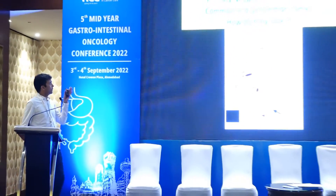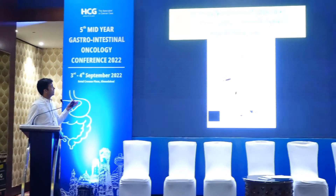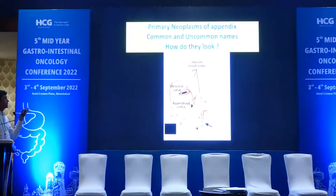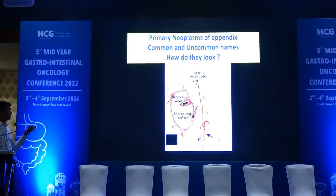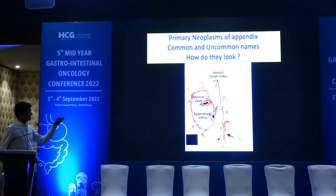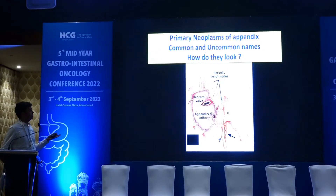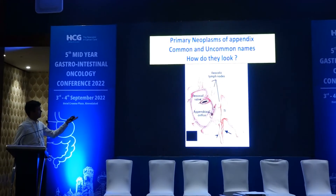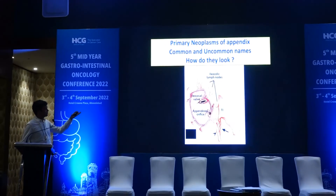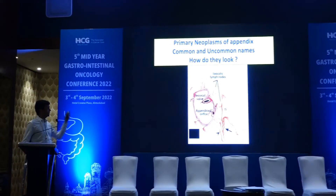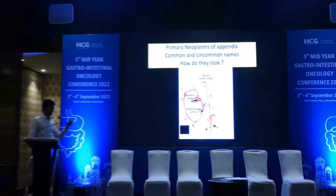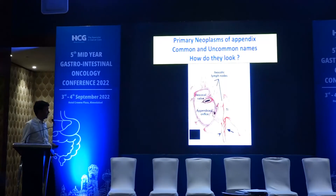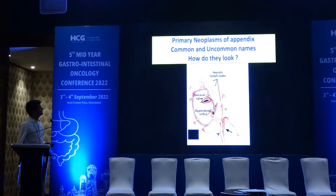So how primary neoplasms of the appendix look — common names, uncommon names, and what they look like. This is the normal anatomy, where the appendix orifice is almost two centimeters below the ileocecal valve — anatomy that is very well versed with all the surgeons.